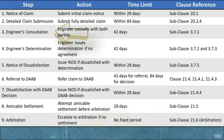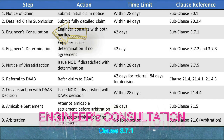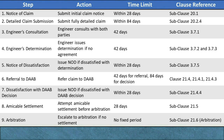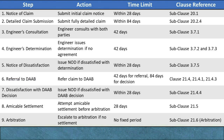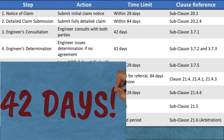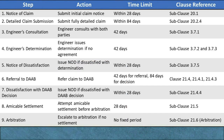Step 3: Engineer's Consultation (Subclause 3.7.1). Action: Upon receiving the fully detailed claim, the engineer initiates a period of consultation with both the employer and the contractor, aiming to facilitate an agreement on the claim. During this period, the engineer engages both parties in discussions to reach a mutually acceptable resolution. Consultation time limit: The engineer has a period of 42 days from the date of receiving the fully detailed claim to conduct the consultation and attempt to reach an agreement.